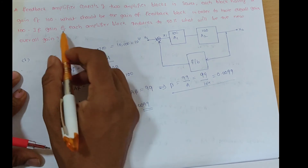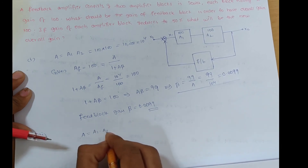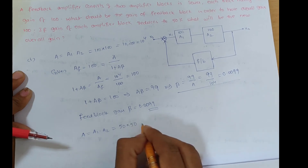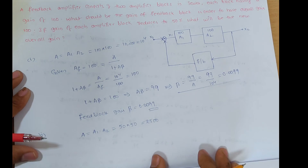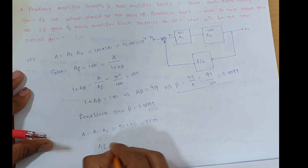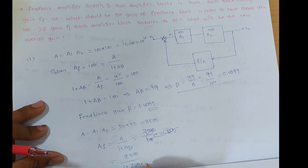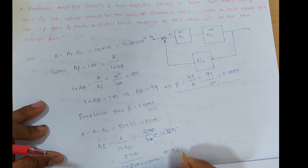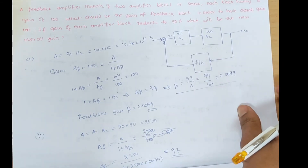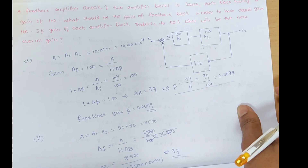For part two: if the gain of each amplifier block reduces to 50%, each block now has gain 50. New overall open loop gain A = 50 × 50 = 2500. The new feedback gain AF = A ÷ (1 + Aβ) = 2500 ÷ (1 + 2500 × 0.0099) ≈ 97. So the new overall gain after each amplifier reduces to 50% is approximately 97.